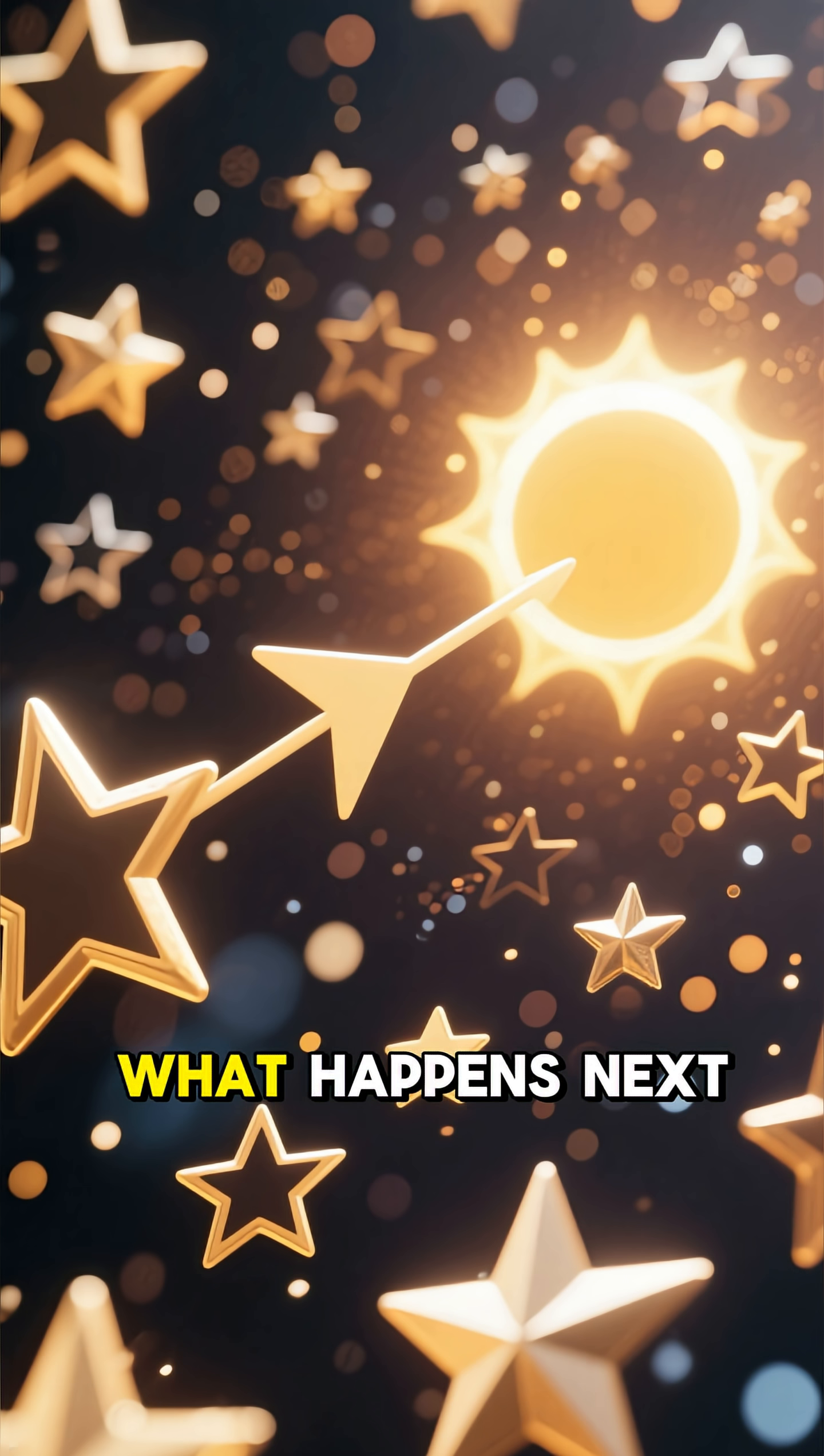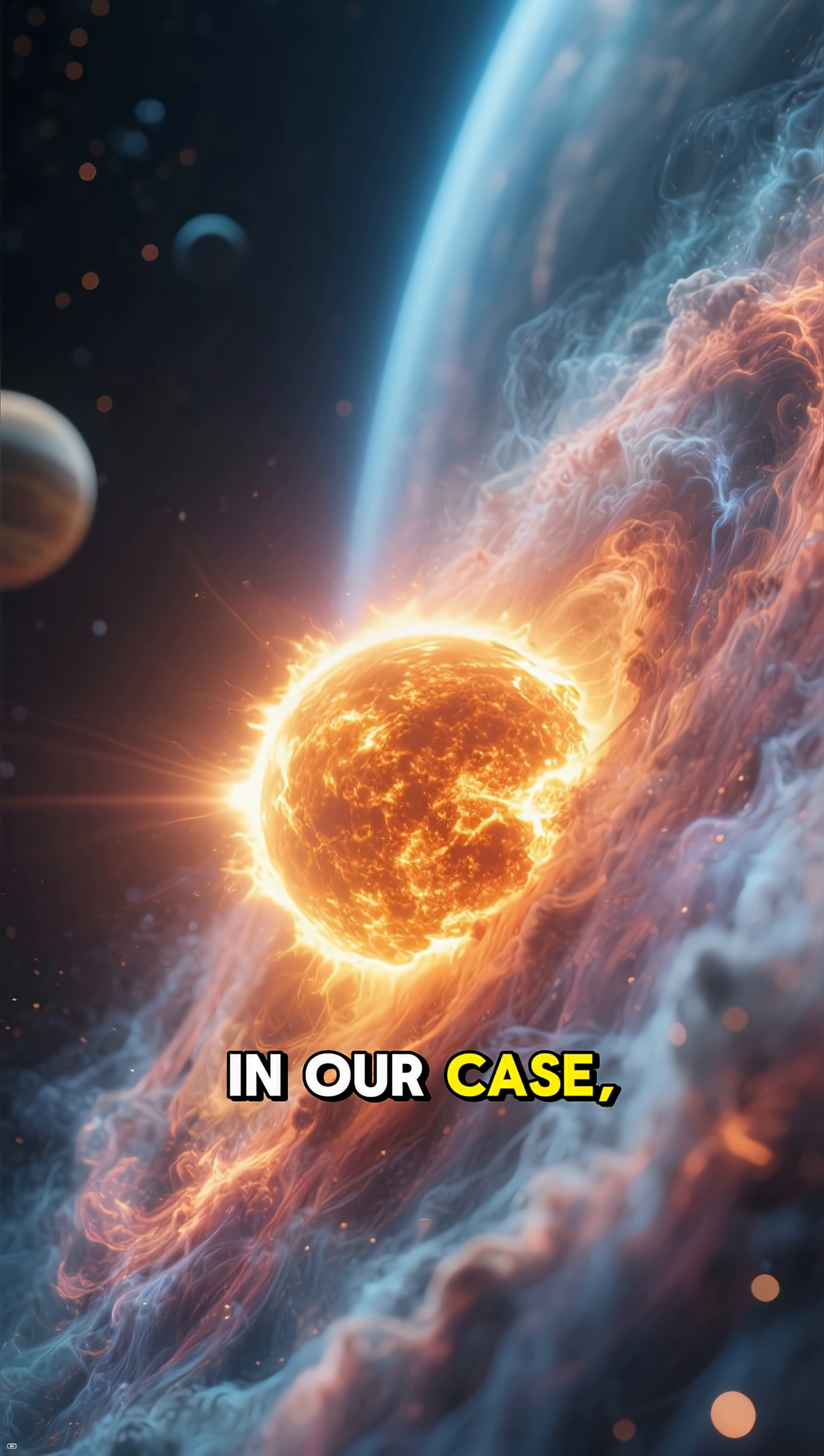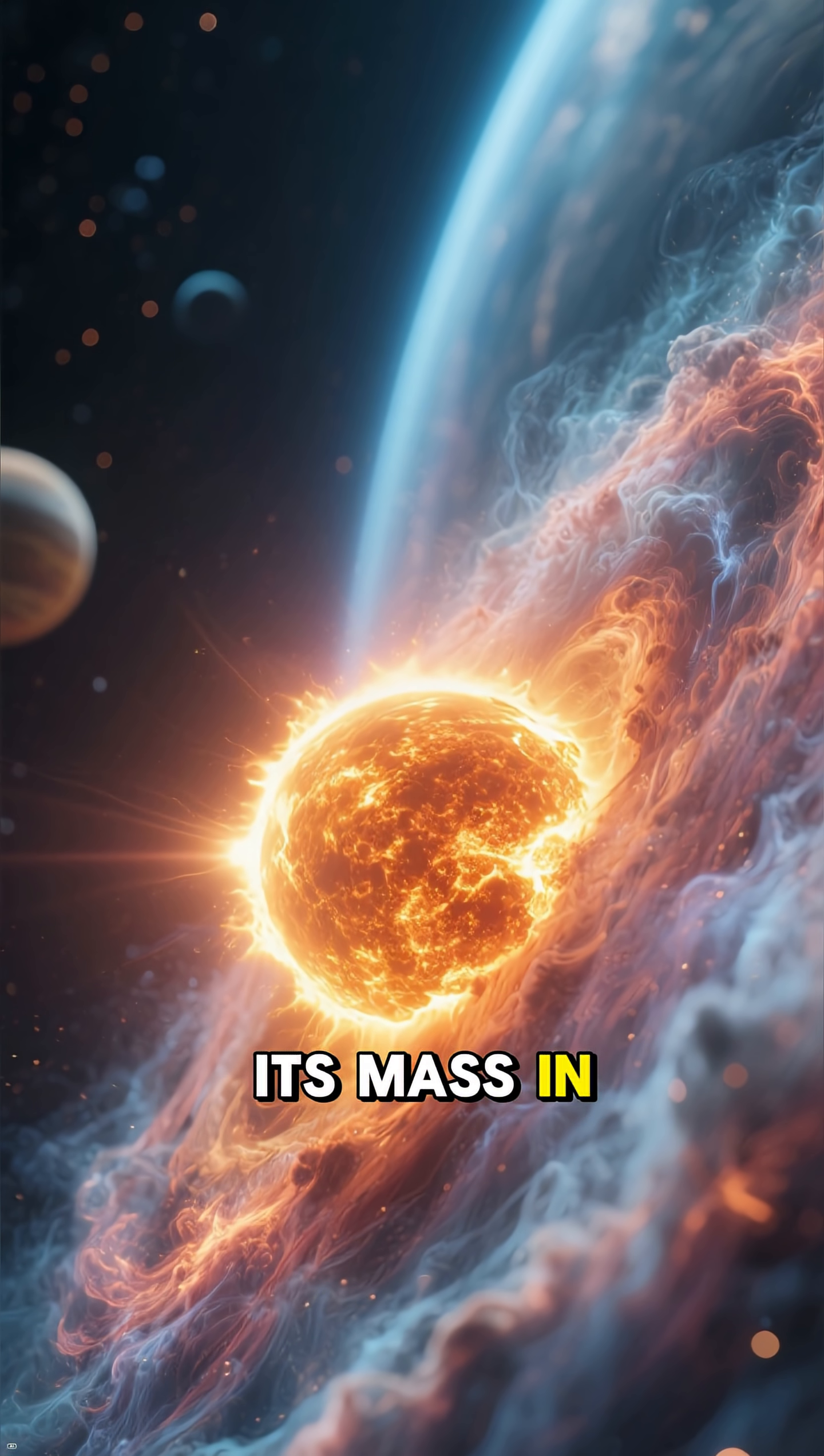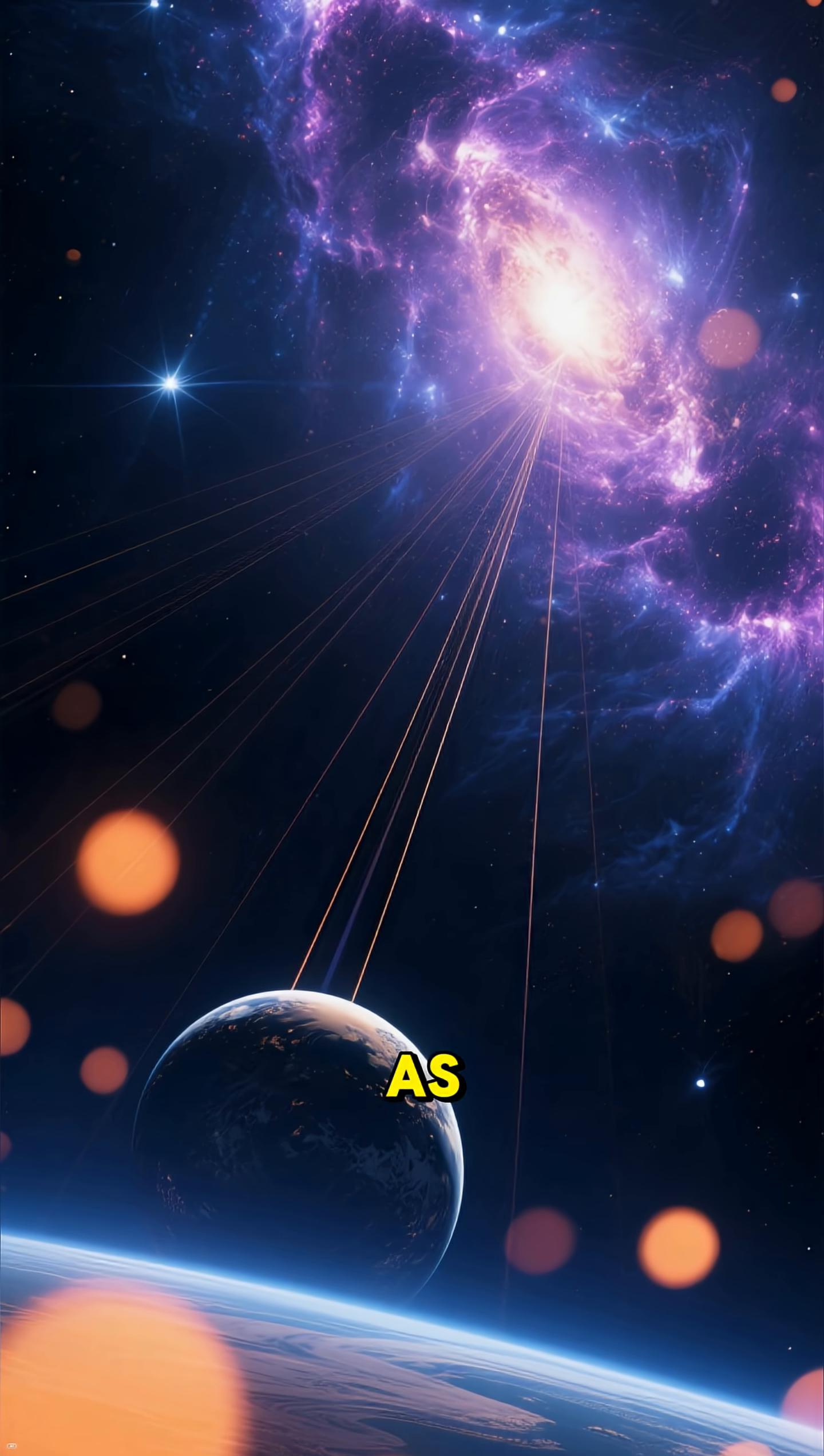But this won't be the end of the story. What happens next depends on how massive the Sun is. In our case, it's medium-sized, so it will shed most of its mass in the form of a planetary nebula. This nebula will extend as far as Pluto's orbit.